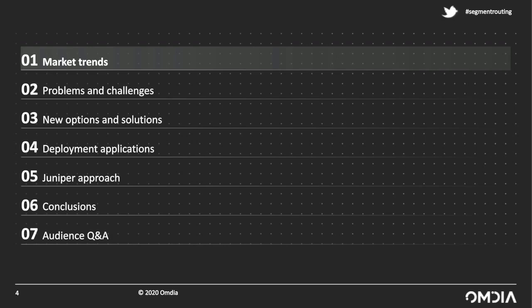Thank you, Alan. A warm welcome to everyone joining us. Over the next hour, we're going to be digging into the evolution of IP networks and in particular how segment routing is a key technology for enabling service providers and other network operators to support new and emerging 5G services in a more efficient and robust manner. I'll start off setting context and sharing some Omdia research in this area, then turn it over to Ron Bonica from Juniper to walk us through the latest challenges driving the evolution of segment routing. We'll also have a few use case examples. At the end, we'll save time for Q&A, so please enter questions into the Q&A interface.